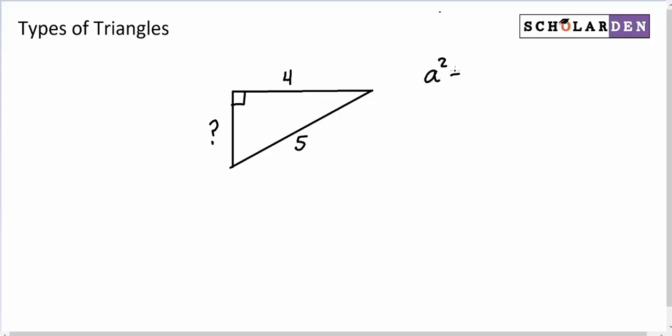So if we write the Pythagorean theorem, and remember that a and b are always legs, we can say that some unknown leg, we'll call this a this time, plus the other leg, which is 4 squared, equals the hypotenuse squared. So a squared plus 4 squared equals 5 squared.